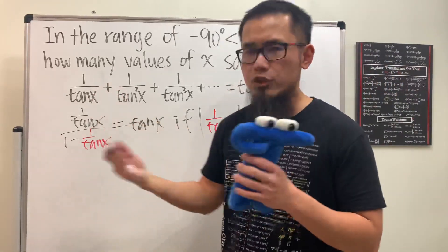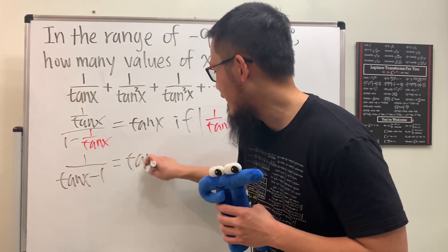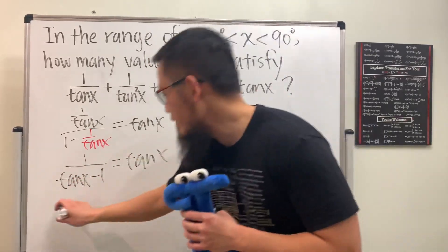Now let's multiply the top and bottom by tangent x. We will get 1 over tangent x minus 1, that's equal to tangent x. And then let's multiply this on both sides. We get tangent squared x.